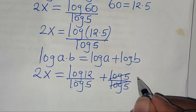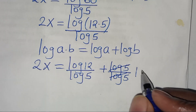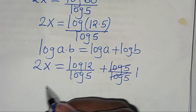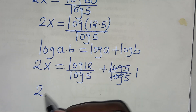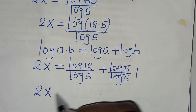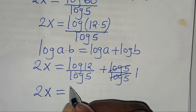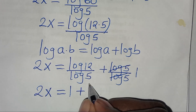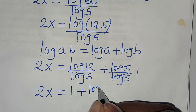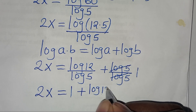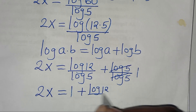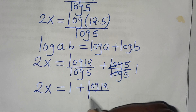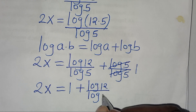Let's simplify log 5 over log 5, so that this is 1. Here we have 2x, this is equal to 1 plus log 12 divided by log 5.